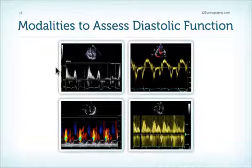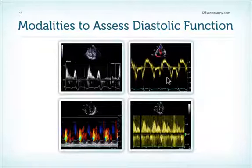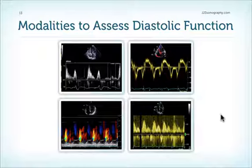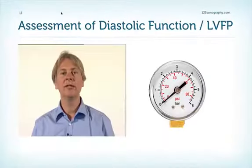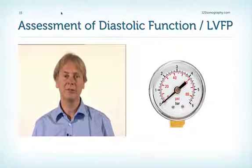With echocardiography, there are numerous modalities with which we can measure diastolic function. Most commonly we use the mitral valve inflow signal with pulsed-wave Doppler, but we can also perform tissue Doppler of the mitral annulus, color M-mode flow propagation, and pulsed-wave Doppler of the pulmonary veins. We'll discuss which modalities to use when and the importance and relevance of each. First, we'll look at pulsed-wave Doppler across the mitral valve.